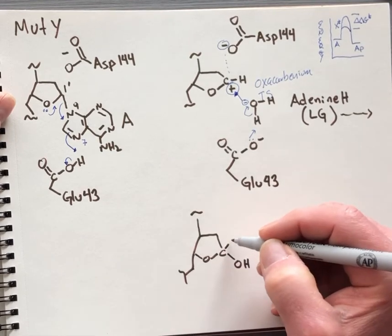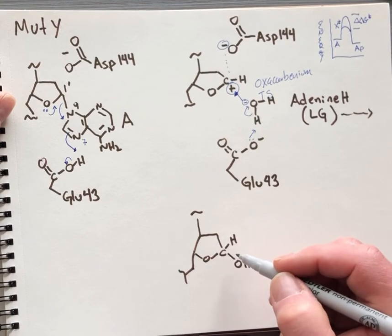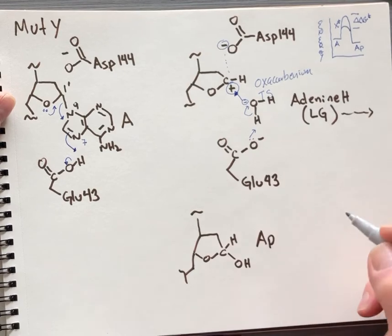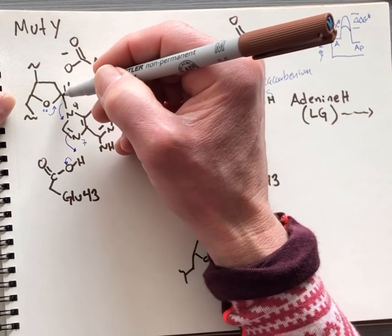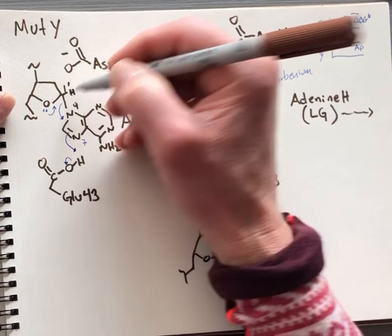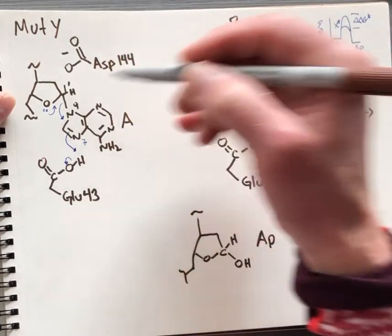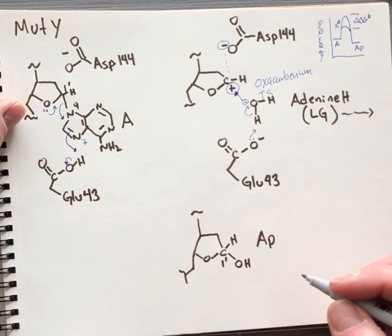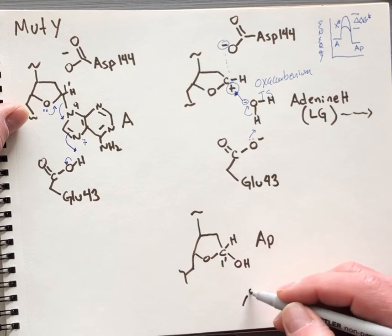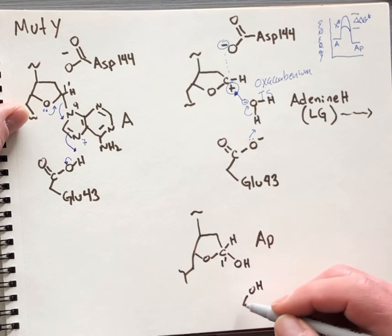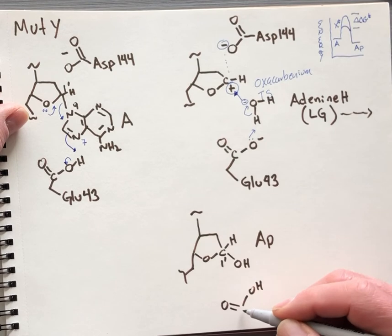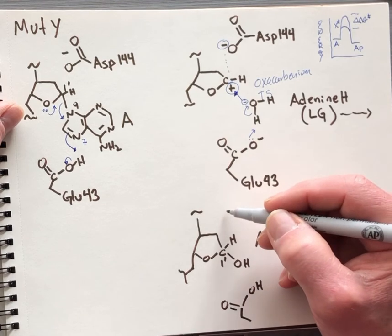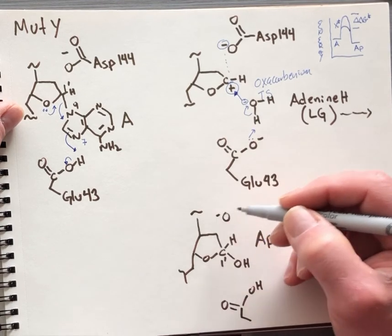The hydroxide nucleophile attacks, and now this carbon is back to its tetrahedral stable form. This is the AP site. Just so there's no confusion, this hydrogen has been present in all of these, both in the substrate at the C1 prime position. This is the finished product. Glutamate 43 is back in its protonated form, ready to undergo another round of catalysis. For completion, we'll draw aspartate in here.